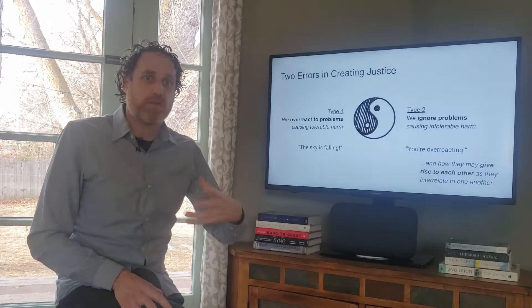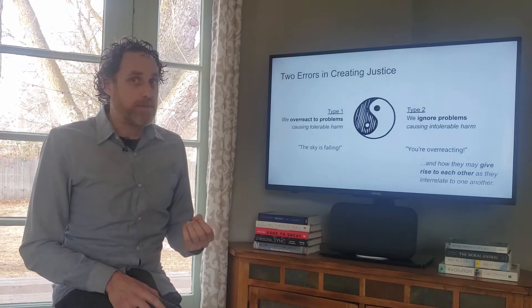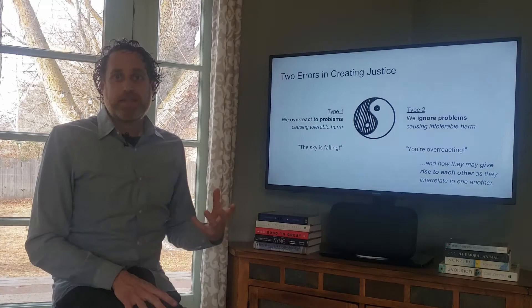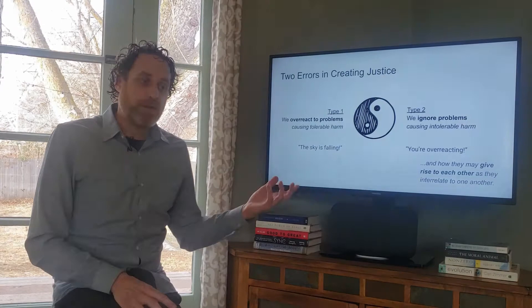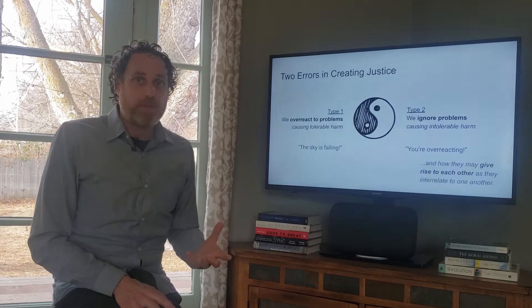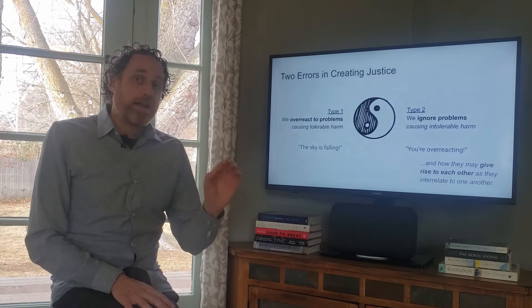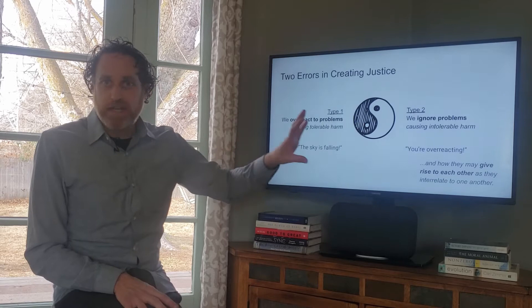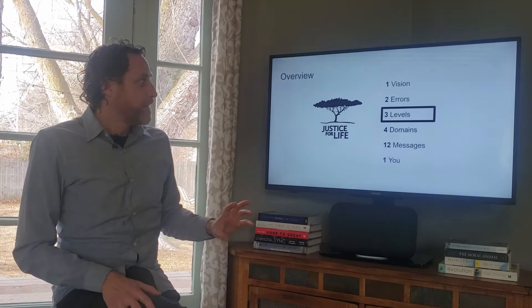When we ignore problems that hold people back, that's a serious failure. A clear example is racial justice: people with Black skin experience something different when interacting with law enforcement and societal systems. If you're not Black, you may not be aware of that problem, and it's natural to want to dismiss it—but we cannot ignore problems that are really affecting people. These two errors come from yin and yang, the inside and outside of our consciousness.